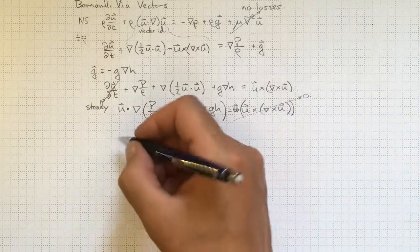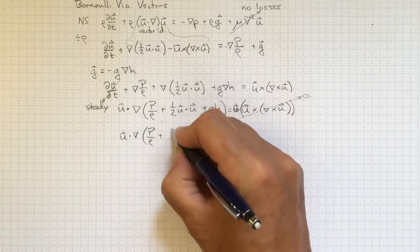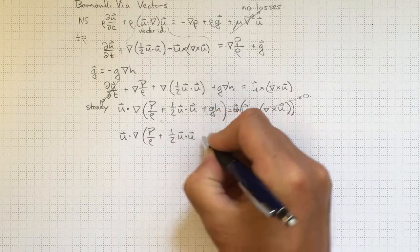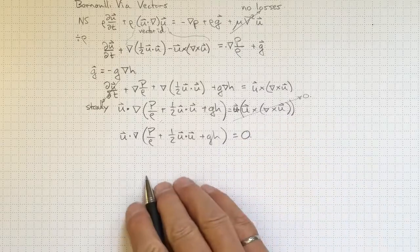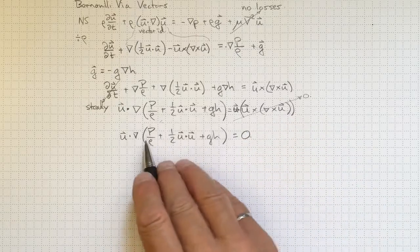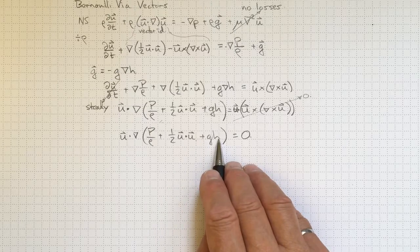So now we've got u dot grad, p over rho, plus a half u dot u, plus g h, equal to zero. This is starting to look like Bernoulli's equation. We've got a pressure term, we've got a velocity squared term, and we've got an elevation term.